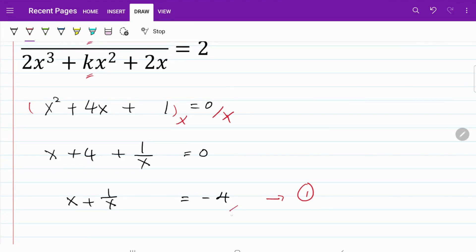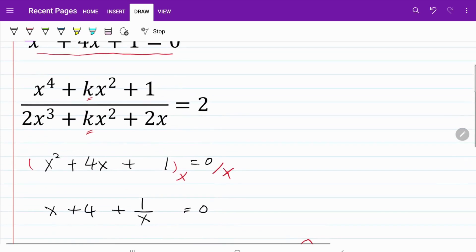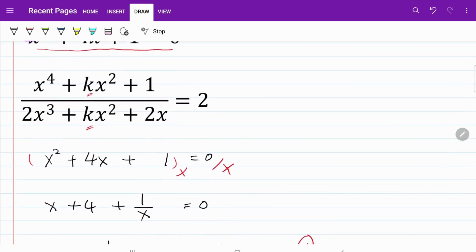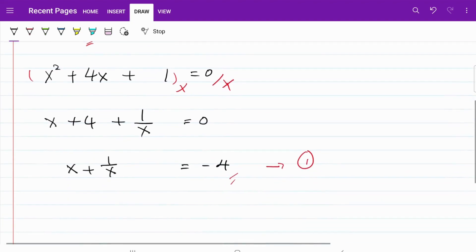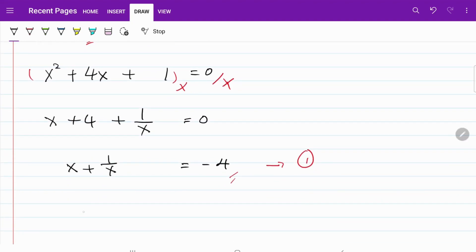I'm trying to relate equation 1 to this fraction. And I know that in order to do that, I need to raise the power to square. So let's go ahead and take the square on both sides. So what I have now is x plus 1 over x, squared, is equal to negative 4 squared.